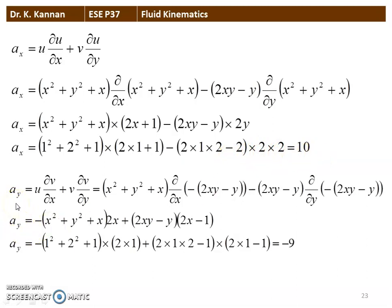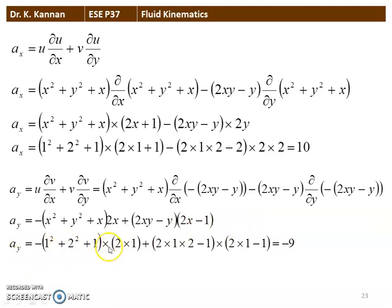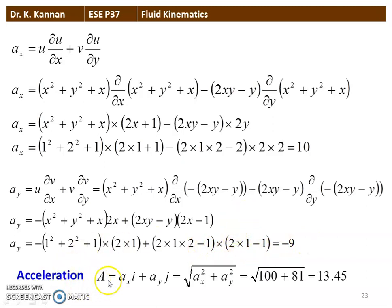For the Y component: AY = U·(∂V/∂X) + V·(∂V/∂Y). With V = −(2XY + Y), ∂V/∂X = −2Y and ∂V/∂Y = −(2X + 1). Substituting the numerical values gives AY = −9. The total acceleration A = √(AX² + AY²) = √(100 + 81) = 13.45 units, which is the answer to the question.